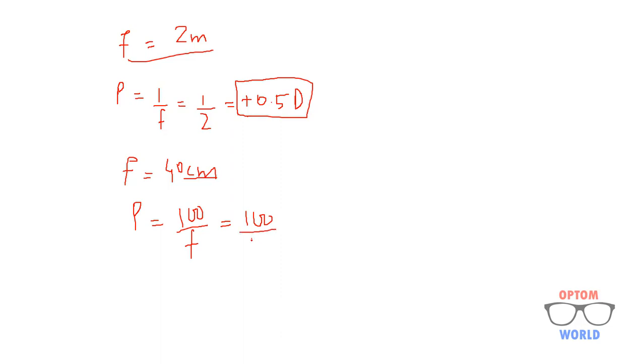So 100 by 40 will give us 2.5 diopters. Again it is a convex lens, so we will write plus sign with it. So the power of a convex lens having focal length 40 centimeters will be plus 2.5 diopters.